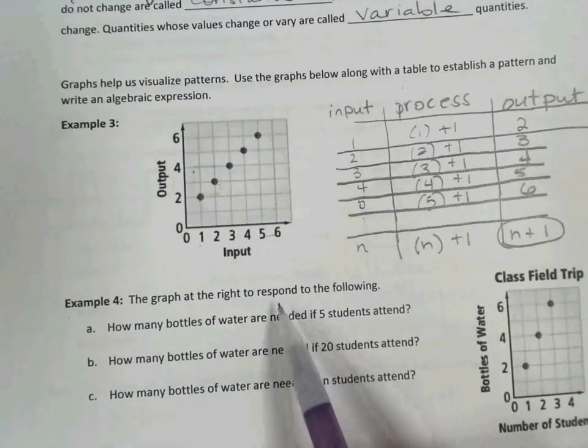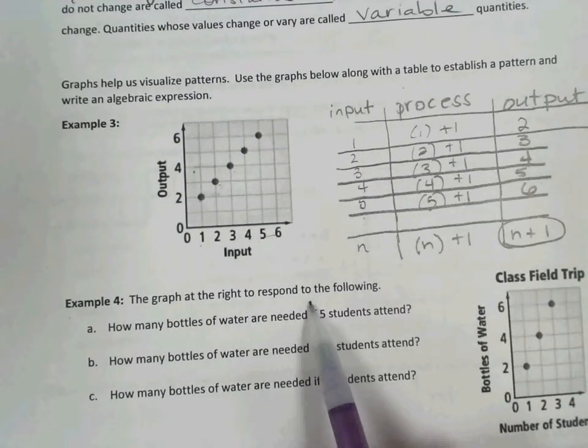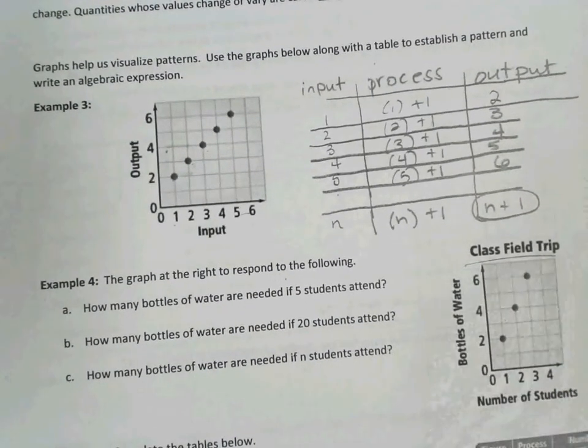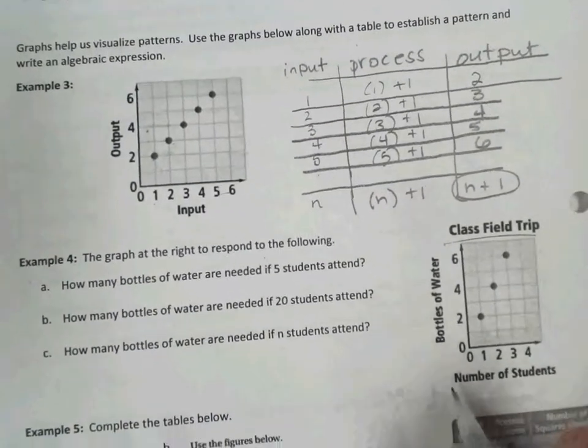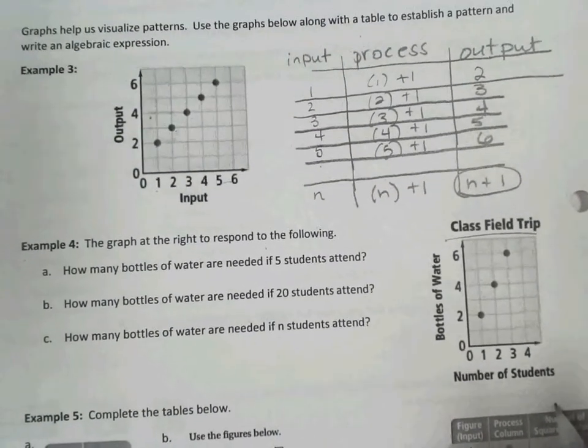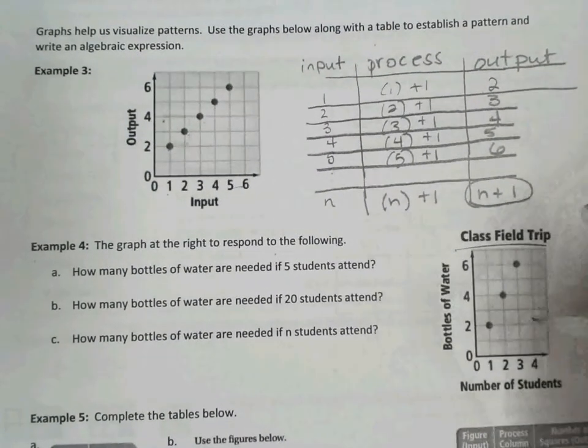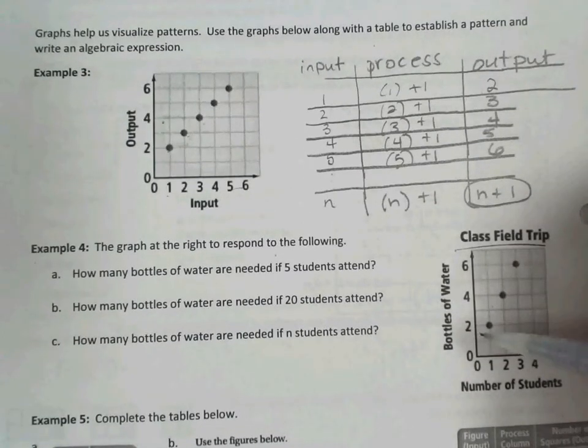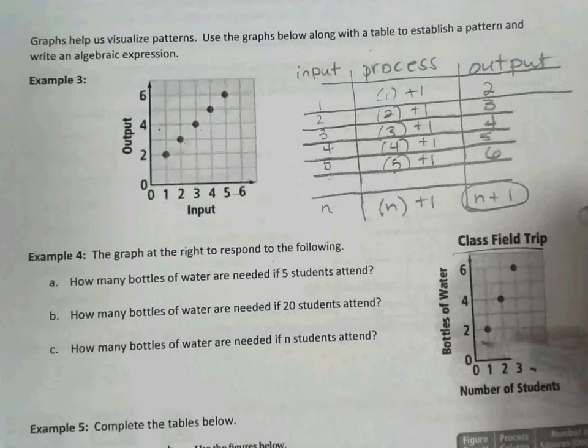Example 4, the graph at the right, we're going to use that to respond to the following questions. So the title is Class Field Trip. We're looking at the number of students on the x-axis as our input and the bottles of water as our output, or y values.